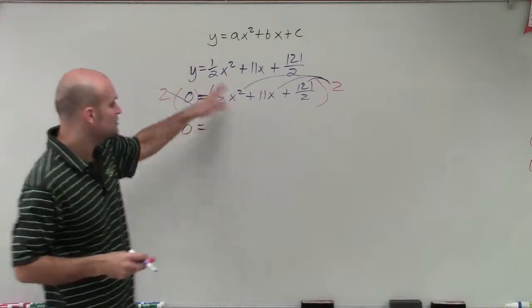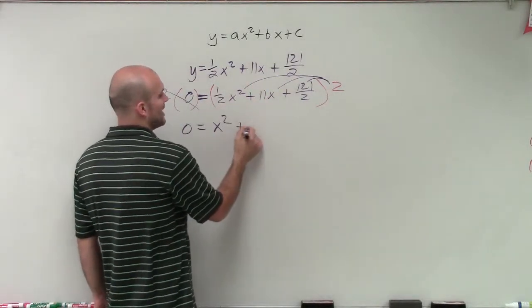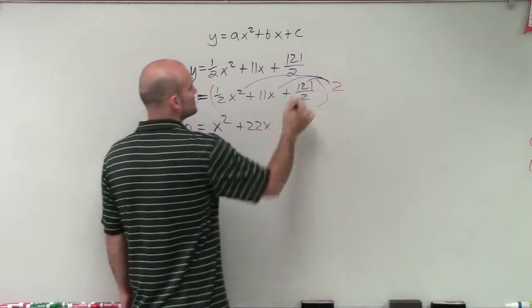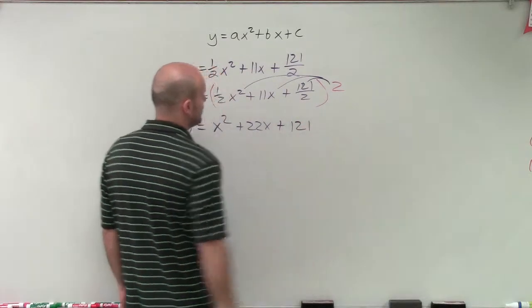So when I multiply 2 times 1 half x squared, that's just going to leave me with an x squared. 2 times 11x is 22x. And 2 times 121 over 2 is just going to leave me with 121.